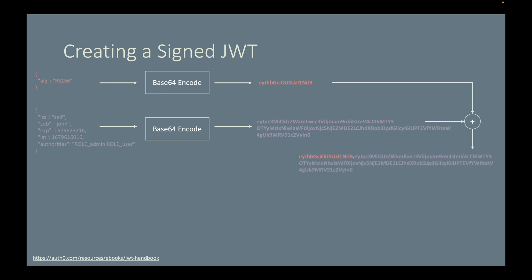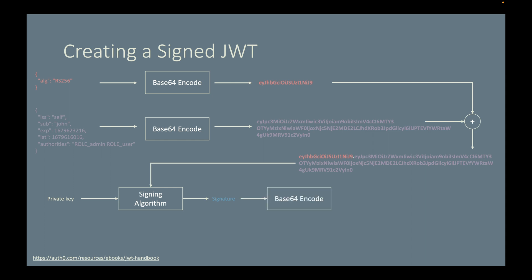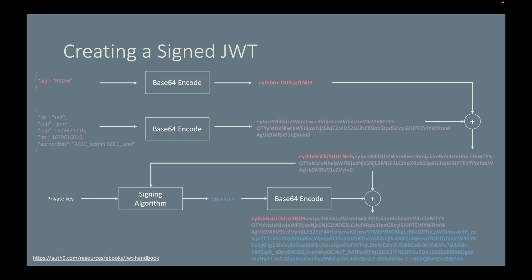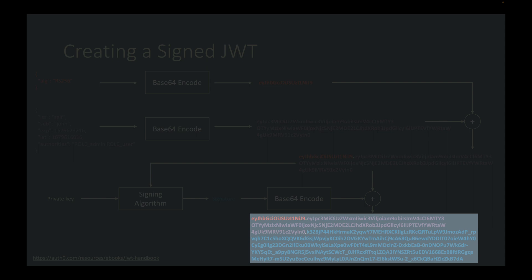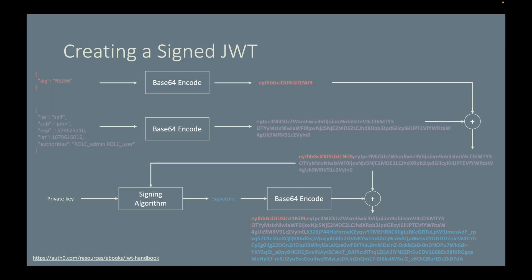Now we're ready to sign this token. This string and a private key will go into the signing algorithm — in this case RS256. The output is the signature. The signature is base64 URL encoded, and finally we join the encoded signature string with the previous string using a dot. Here is the final signed JSON web token.